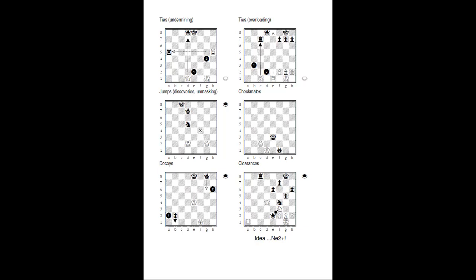The final basic idea is the clearance sacrifice — or clearance move — where we move one of our pieces off a square so another can occupy it. If a black knight were on e2 instead of the queen, it would be a fork attacking the king and queen. So the black queen captures on f3 to clear the square, and if white plays pawn takes queen, knight to e2 attacks the king and queen simultaneously. Effectively, queen takes knight wins black a full piece.